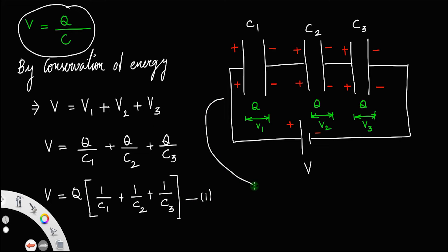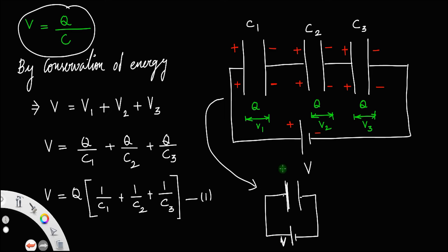Now, if we replace these three capacitors with a single capacitor connected to the same cell of potential V, let us call the capacitance of this single capacitor Cs, where S represents series — the capacitance of the series combination. What we are saying is: we replace these three capacitors with a single capacitance so that the effect remains the same. That is what we mean by effective capacitance.